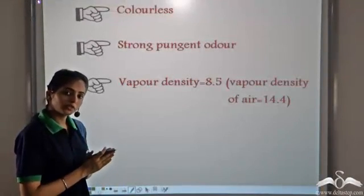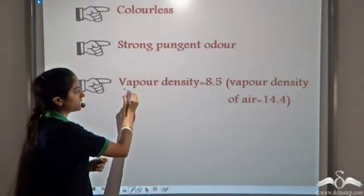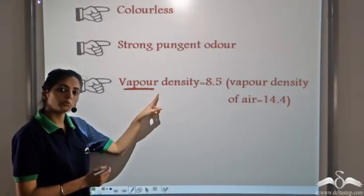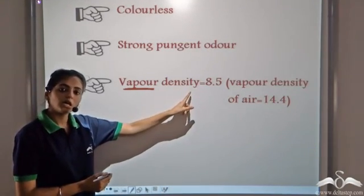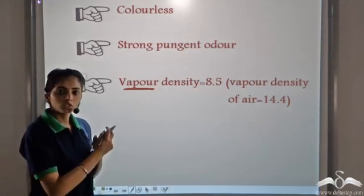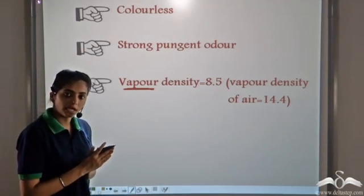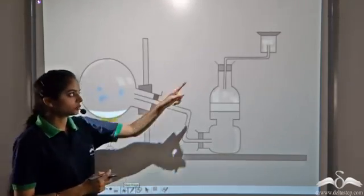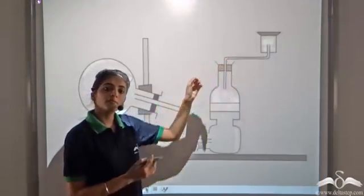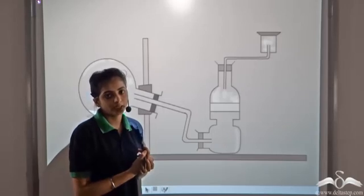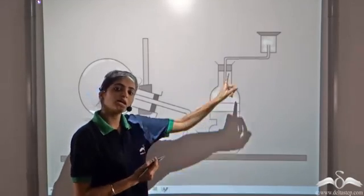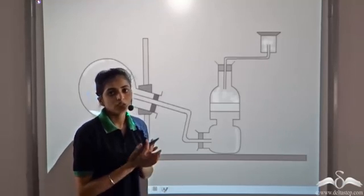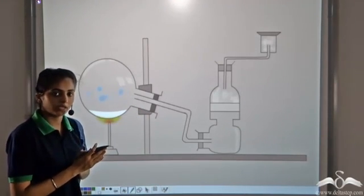Since we are talking of a gas, that is ammonia, we talk of the vapour density. The vapour density of ammonia is 8.5 and that of air is 14.4. So this shows that ammonia is lighter than air, and this is the reason why, while collecting ammonia, it is collected by the downward displacement of air. Since it is lighter than air, it rises on top and displaces the air from below.